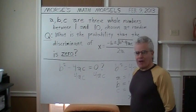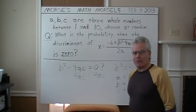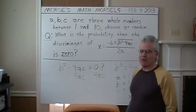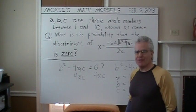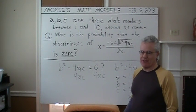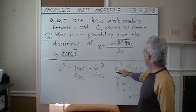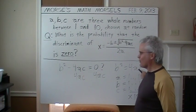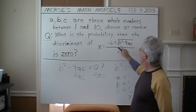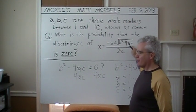So, of those 1,000 groups of values for A, B, and C, there is a probability that a triple of those will result in this B squared equaling 4AC, or this B squared minus 4AC equals zero.